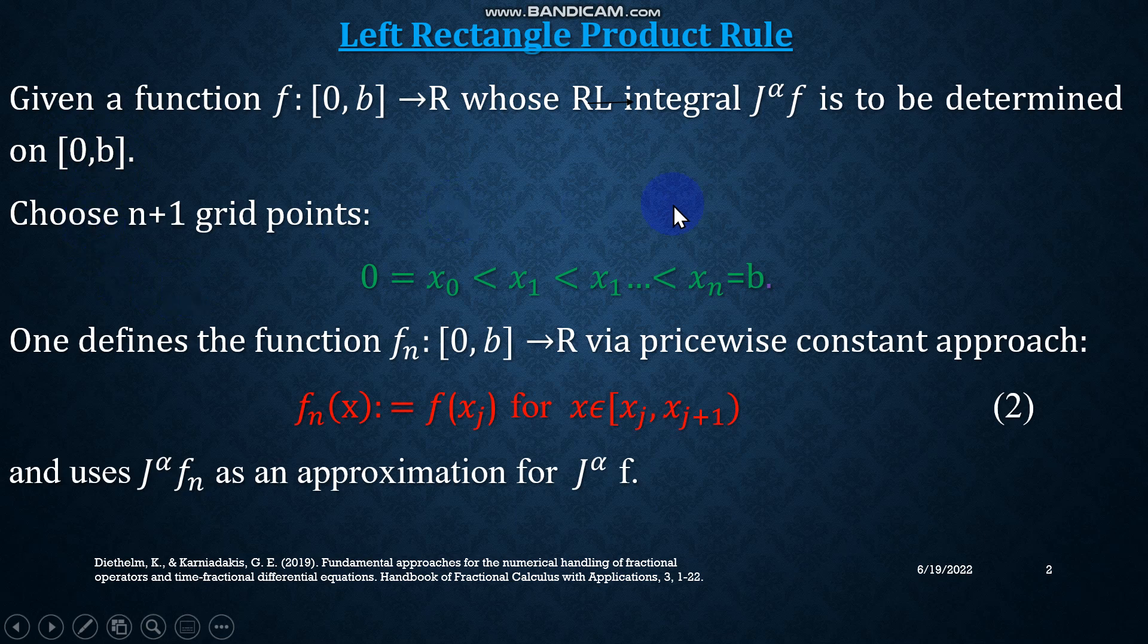So whenever we think to approximate a function with polynomial interpolation, the simplest function that comes into our mind is a constant function, and this is what I have written in equation number 2. f(x) is approximated by f(xⱼ), where this xⱼ is the left endpoint of the interval.